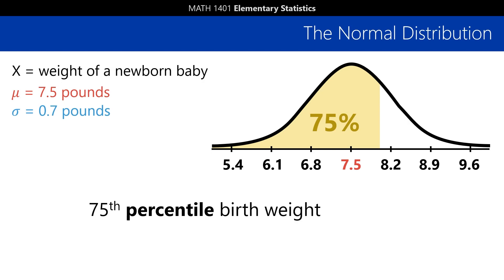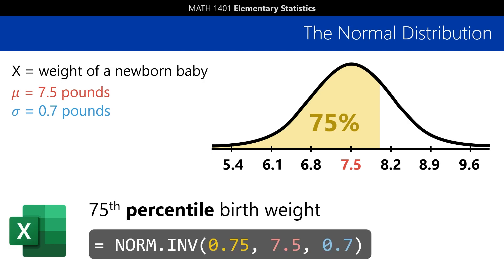To find that weight, the command is NORM.INV, which stands for normal distribution inverse. We start with the cumulative probability, 0.75, make sure to enter it as a decimal, followed once again by the mean and standard deviation, and we end up with about 7.972.